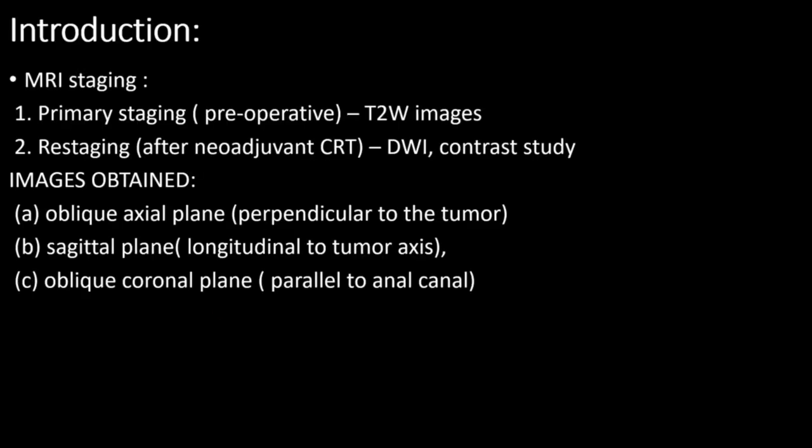Rectal carcinoma staging is of two types. Primary staging is done preoperatively, where T2-weighted images are important. Re-staging is done after neoadjuvant chemo-radiation therapy, where DWI and contrast studies are important. Images are obtained in the oblique axial plane perpendicular to the tumor axis, sagittal plane longitudinal to the tumor axis, and oblique coronal plane parallel to the anal canal.